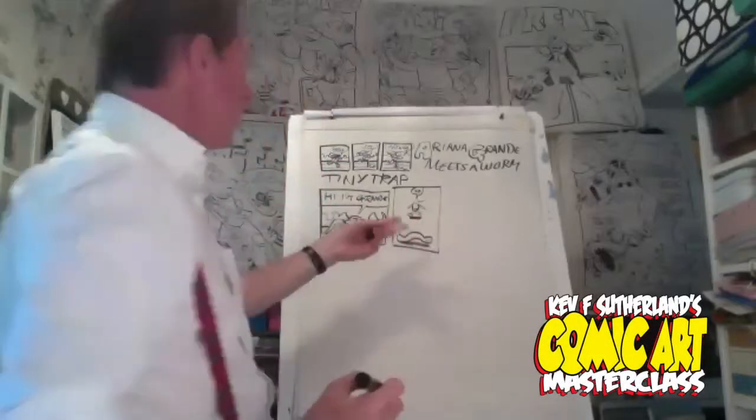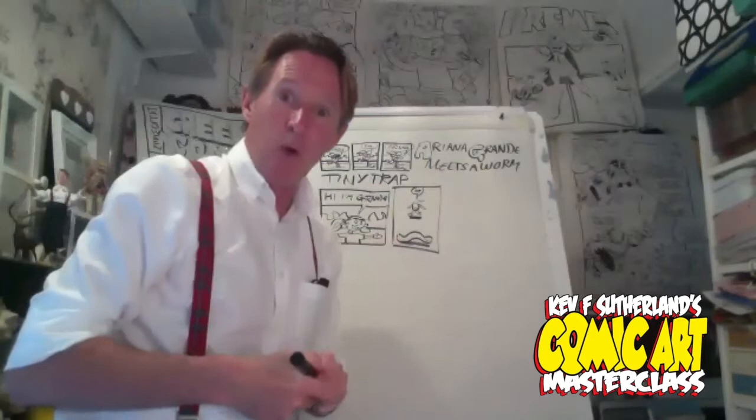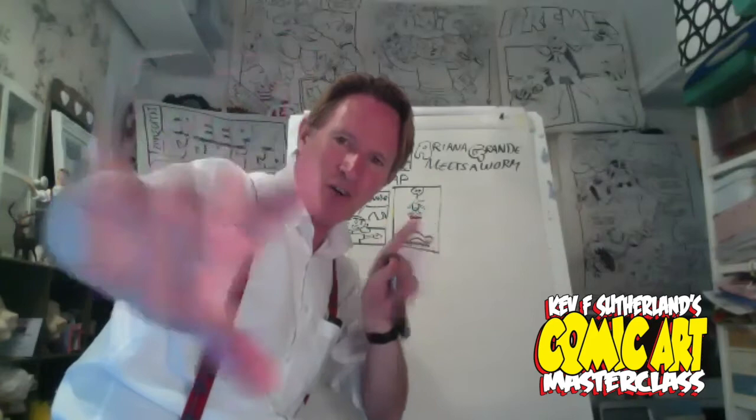Doesn't it look better with something small in the distance and something big because it's close up? Just like when you're looking on the zoom screen, my hand is big because it's close up, and it's smaller and further away.